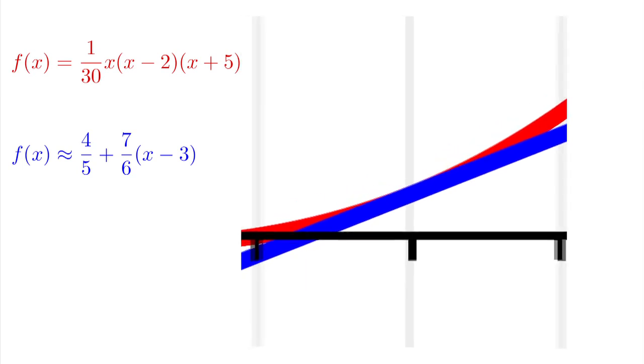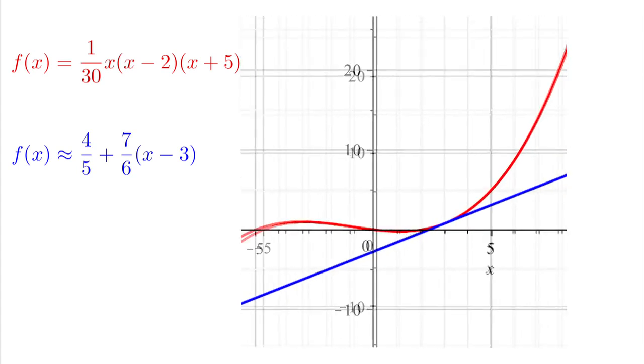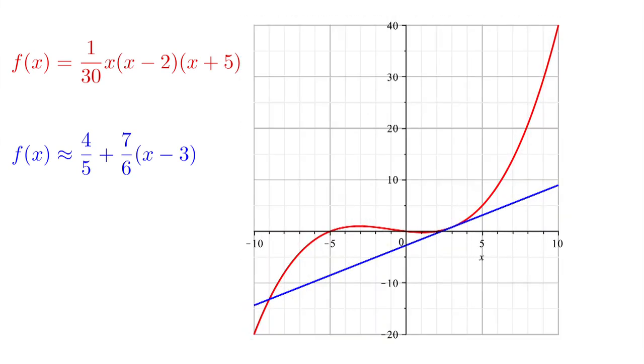But what about when we zoom out? Is it still a good approximation? Let's give a mathematical justification that the tangent line is a good approximation.